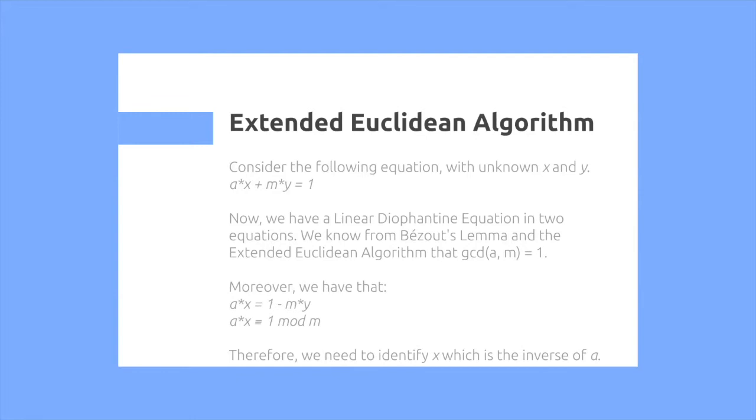Now, we have a linear diophantine equation and two equations with two unknowns. You know from Bezout's lemma and the extended Euclidean algorithm that GCD of a and m is equal to 1. Moreover, we have that a times x is equal to 1 minus m times y.